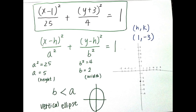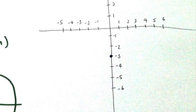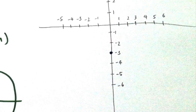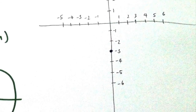Next we need to find the center of the ellipse, which is h and k. h is the x-coordinate and k is the y-coordinate. x minus 1 equals 0, so h equals 1. y plus 3 equals 0, so k equals negative 3. Now we can graph the center of the ellipse, which is (1, negative 3).